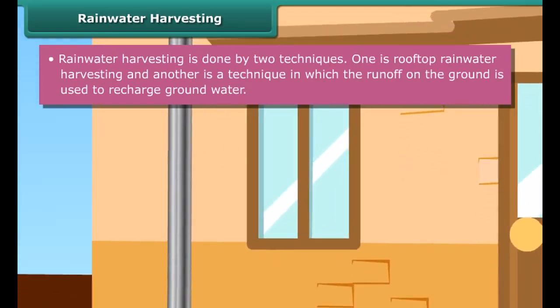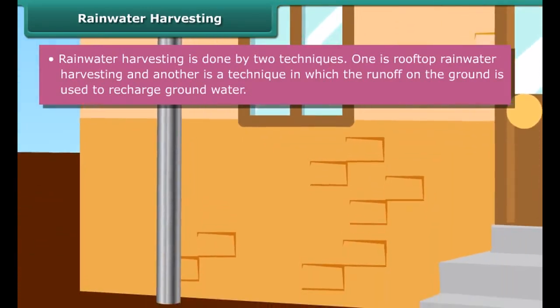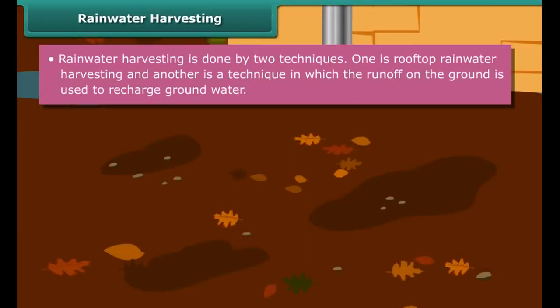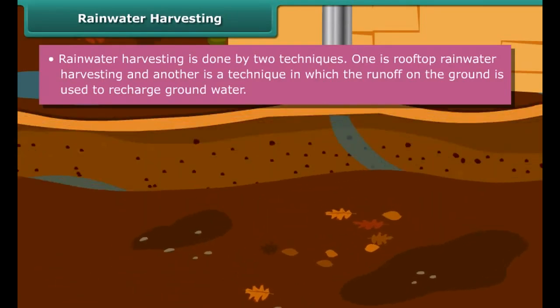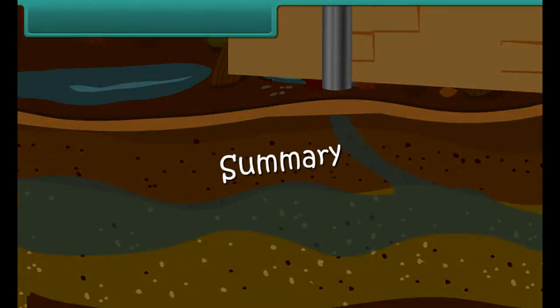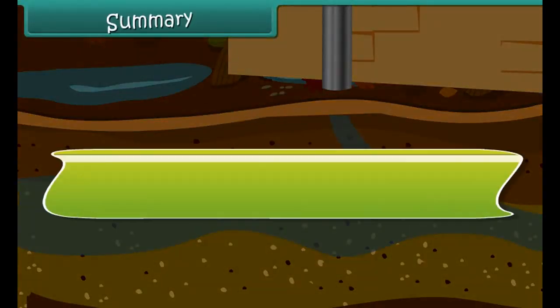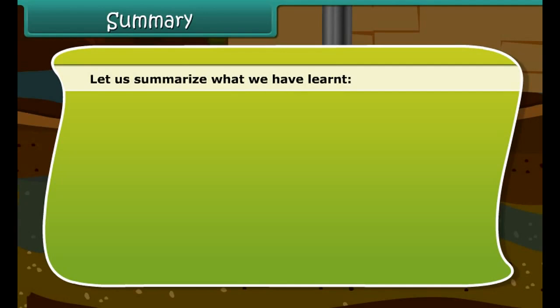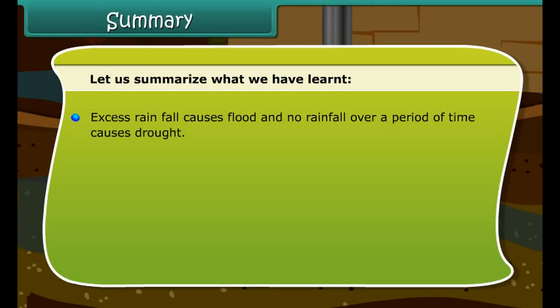If we collect and store all the rainwater that collects on our terraces, roads, and pavements instead of letting it run into ditches, we could actually have vast reserves of water. Collecting and storing of rainwater is called rainwater harvesting.